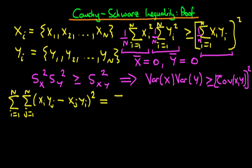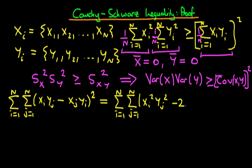First, I expand out this quadratic parenthesis. So I've got the sum from i equals 1 to n of the sum from j equals 1 to n of xi squared times yj squared, minus 2 times xi times yi times xj times yj, plus xj squared times yi squared. I've just expanded out that quadratic parenthesis.